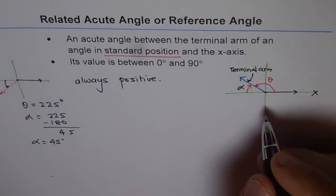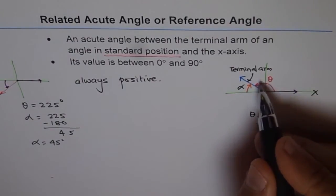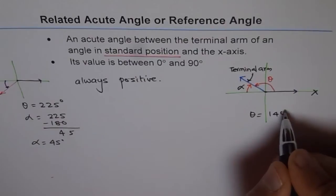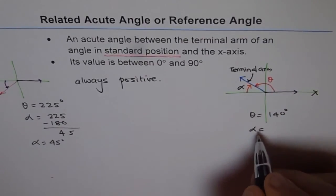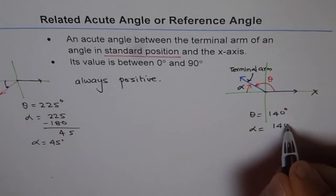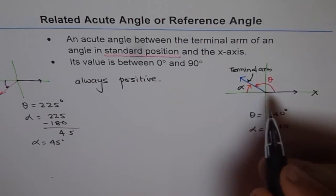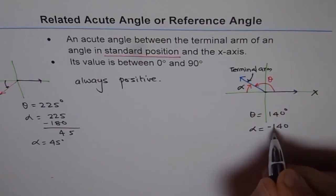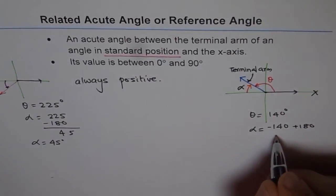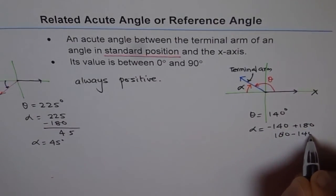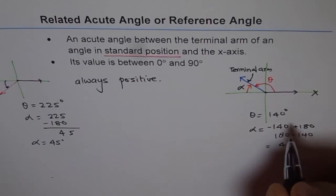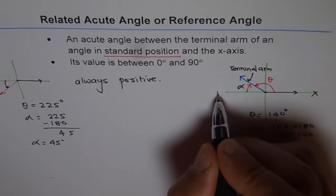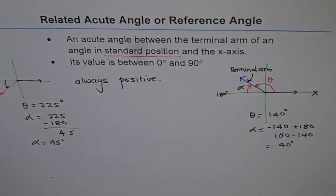Now let's say theta is more than 90 and less than 180 — say, around 140 degrees. Then what is the related acute angle alpha? Alpha is taken away from 180, so we write 180 minus 140, which is 40 degrees. From the initial arm to the terminal arm is 140 degrees, and 40 more would make it 180 degrees. So alpha is 40 degrees.